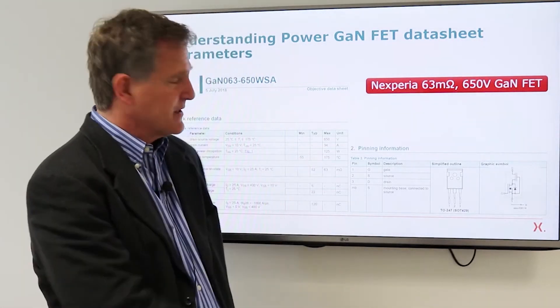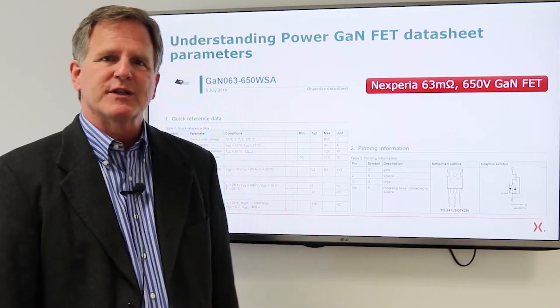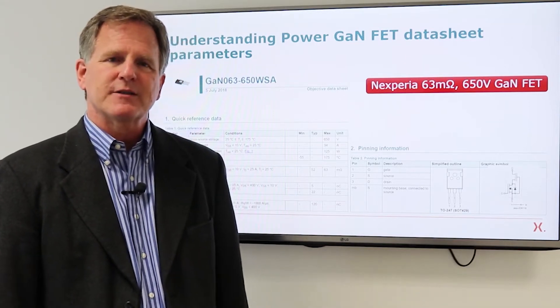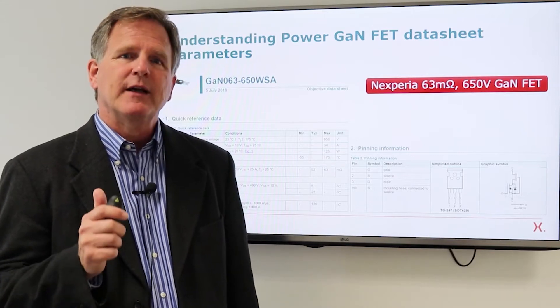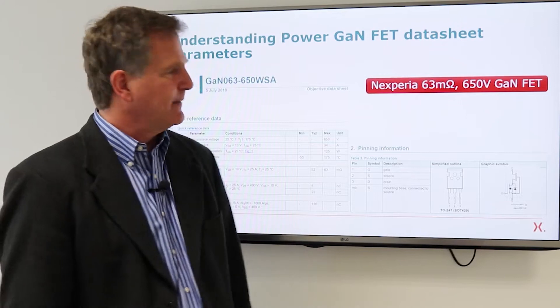FETs. We're going to use this as an example, the Nexperia GAN 063-650WS. That's a 63 milliohm room temperature max, 650 volt GAN power FET.